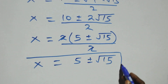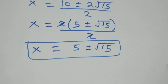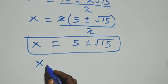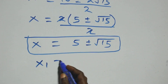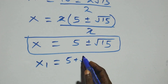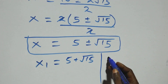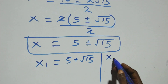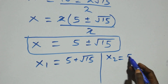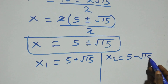We get x equals 5 plus or minus root 15, giving two possible values: x1 equals 5 plus root 15, and x2 equals 5 minus root 15.